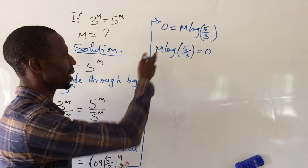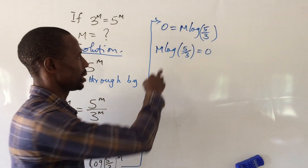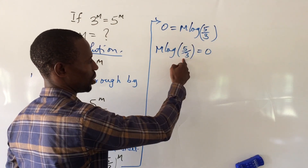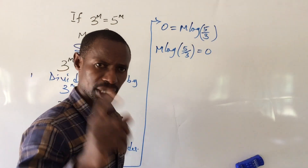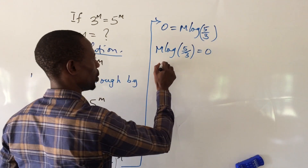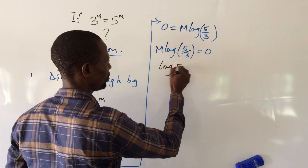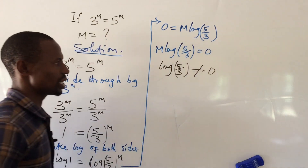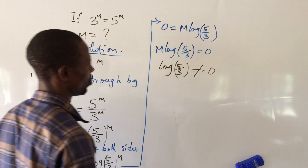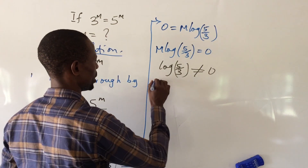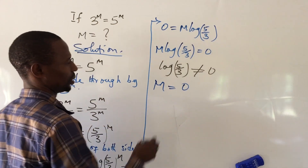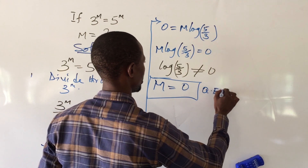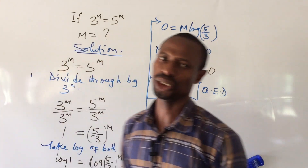Applying the zero product property, we get m equal to 0 or log(5 over 3) equal to 0. But remember that log(5 over 3) is not equal to 0, so the only solution that works is therefore m equal to 0. This is the solution to this exponential equation.